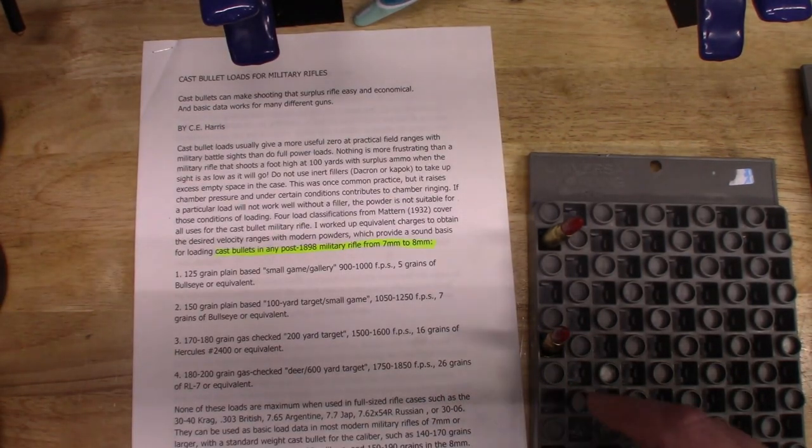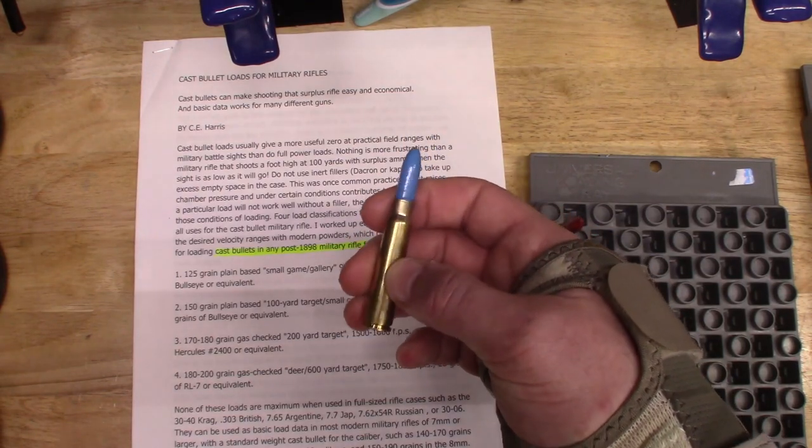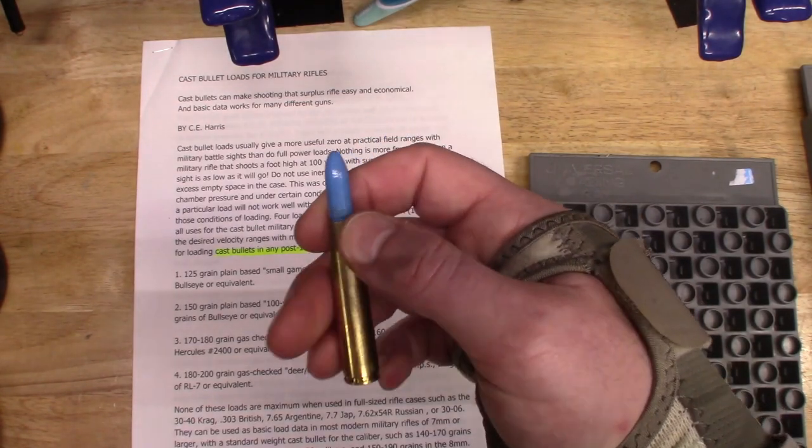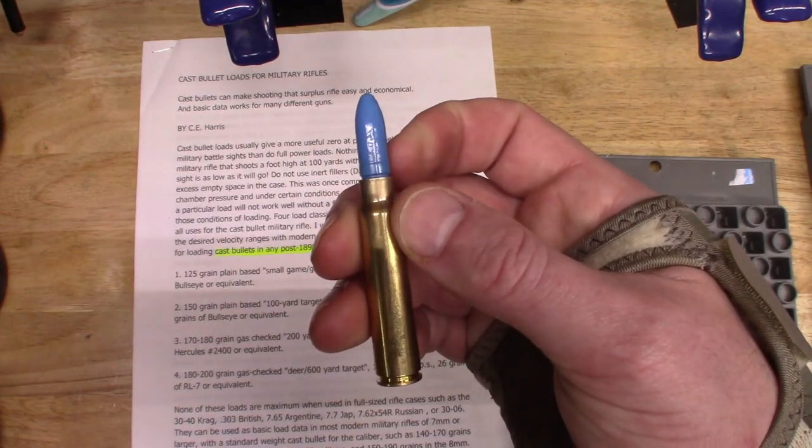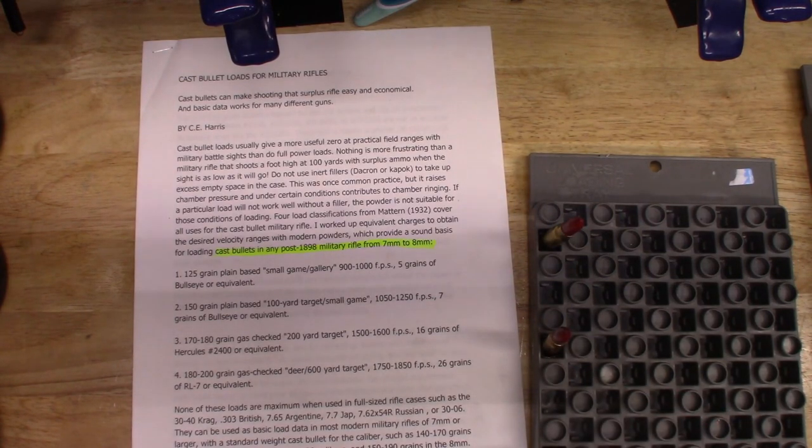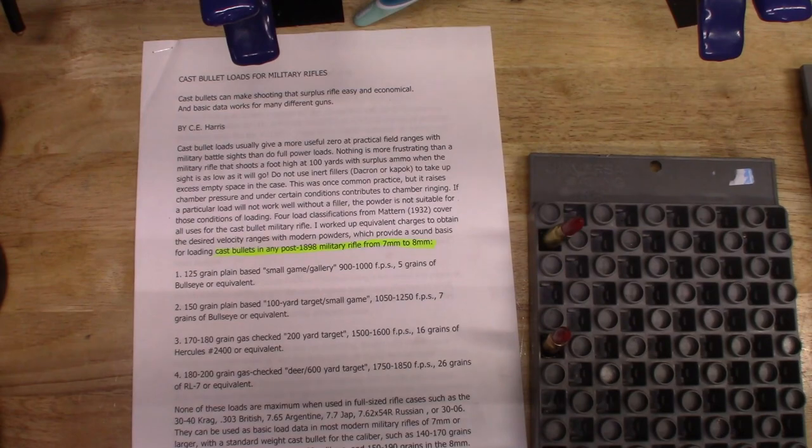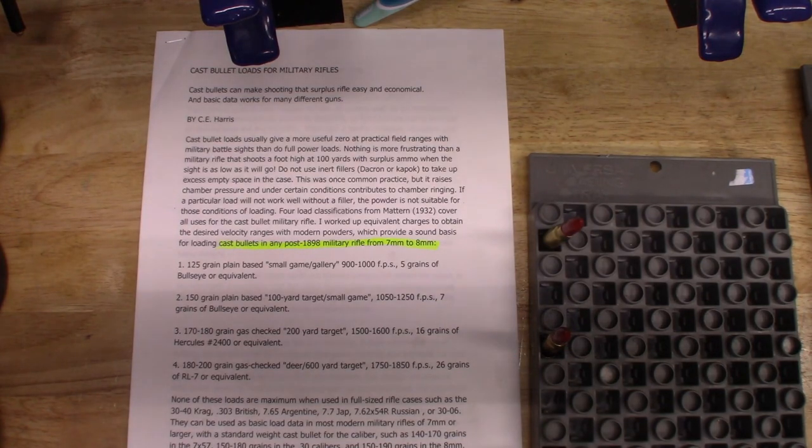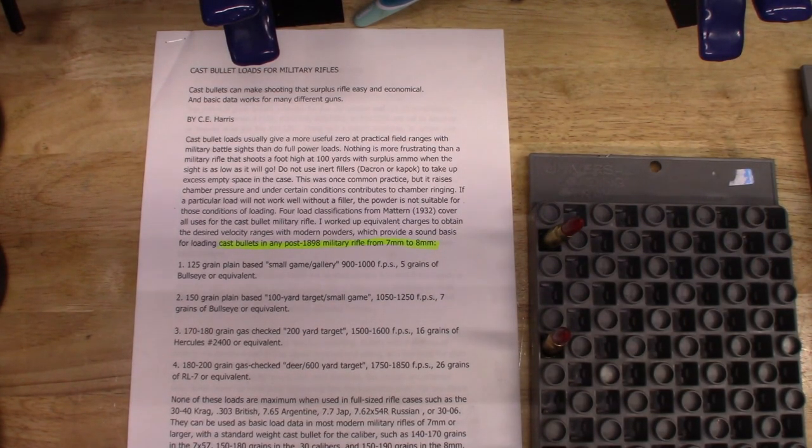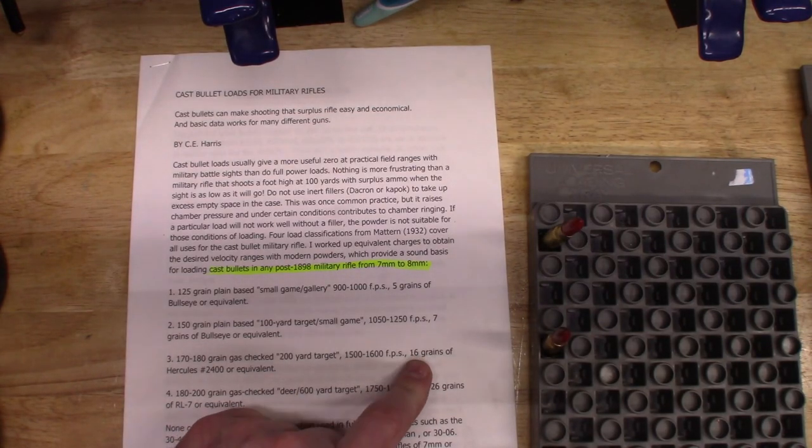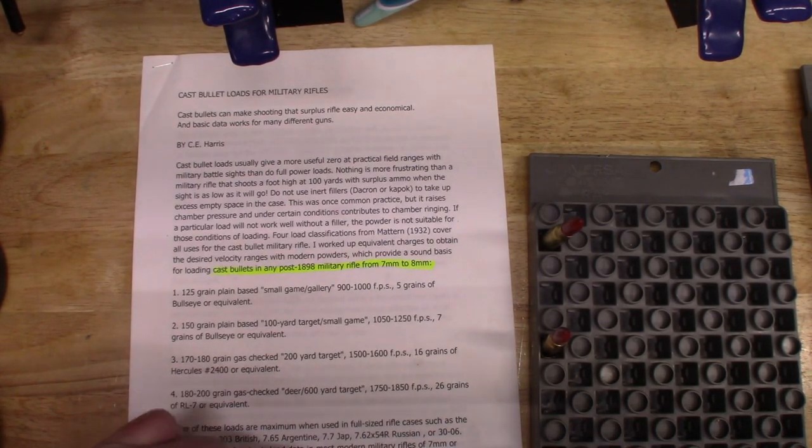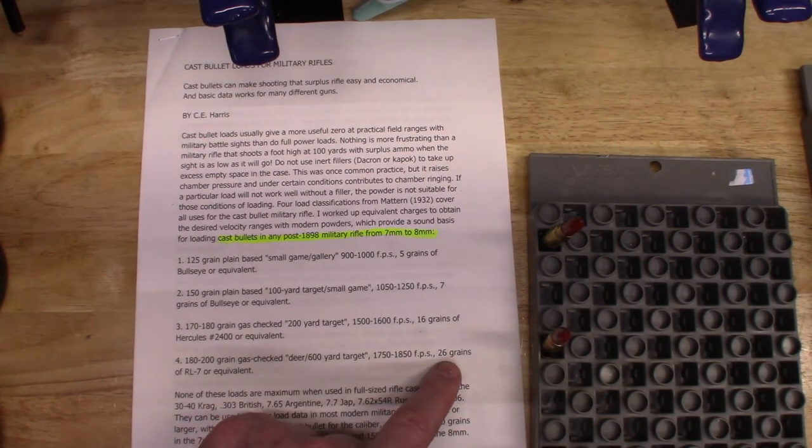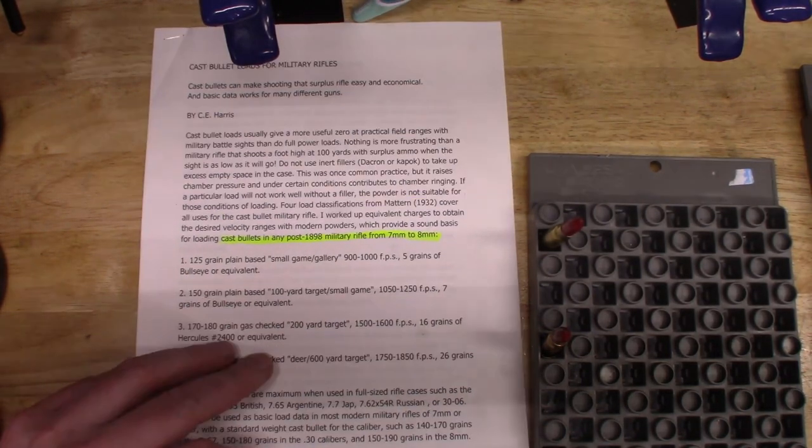As an example here, my 7.65 Argentine loads I have settled on 25 grains of Reloader 7, and I'm using a 205 grain powder coated bullet. Those shoot quite well. I sized them to .312, and we're going to talk about bullet size later—that's a really important issue here. For target loads, I'm not doing any deer hunting, just punching holes in paper or shooting steel. I'm usually going to be using 18 to 20 grains of 2400 or go into a slower powder if those won't seal or they won't shoot well, and starting with 25 grains or so of Reloader 7.